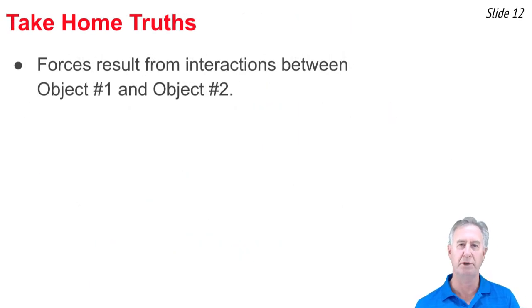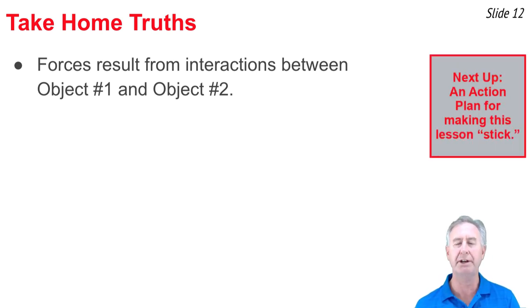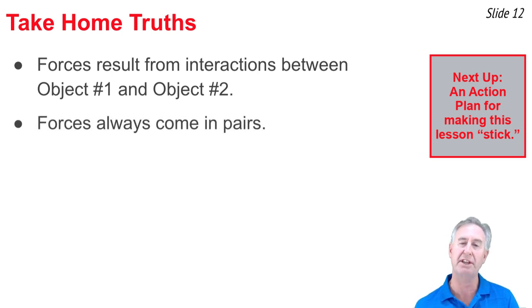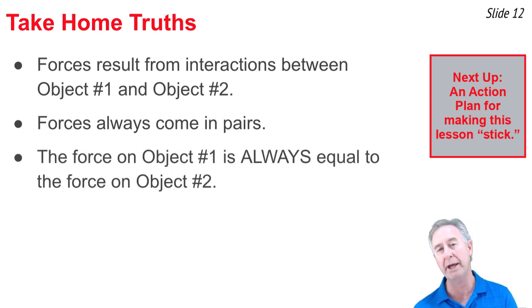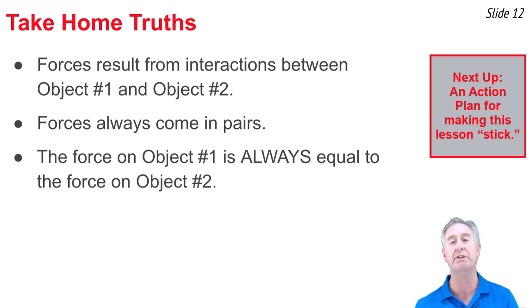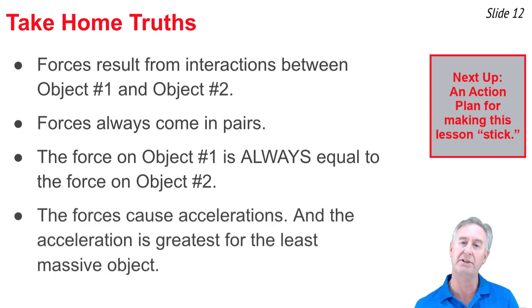Here are some take-home truths. Forces result from interactions between two objects, producing a force on each — forces come in pairs. The force on object one is of equal magnitude and in the opposite direction as the force on object two. And even though the forces are equal, the accelerations that result are not necessarily equal — they will always be greatest on the object that has the least mass.